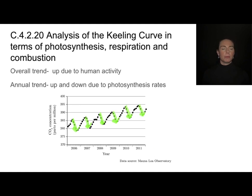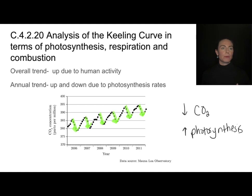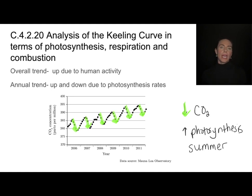What could possibly be causing a dip in carbon dioxide levels? Well, that's probably because there is more photosynthesis happening. Photosynthesis removes carbon dioxide from the atmosphere, so the more photosynthesis happening, the more carbon dioxide is going to be removed. That's responsible for this reuptake and this dip in carbon dioxide. This is likely due to it being summer in whatever hemisphere we're in — it's not a certain month, it's just a season. So the annual trend of this up and down is due to photosynthesis rates.